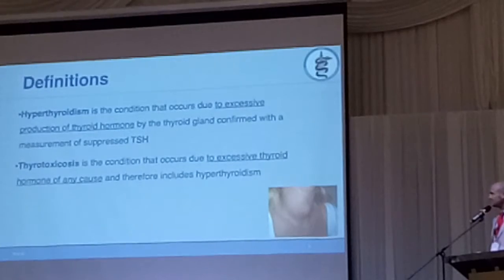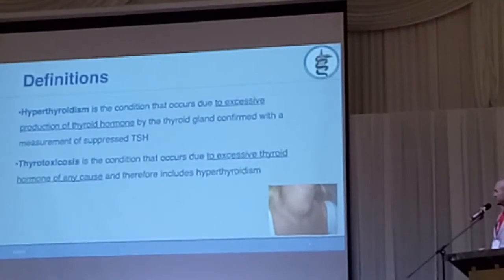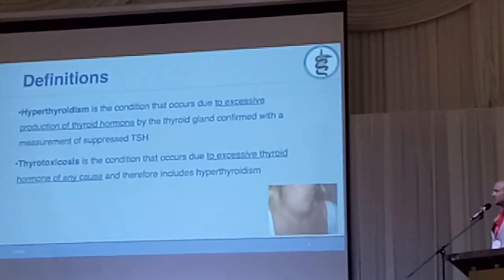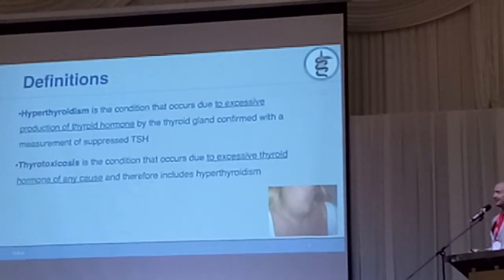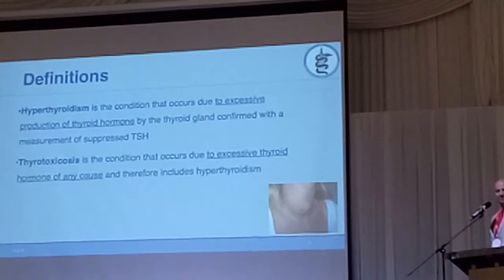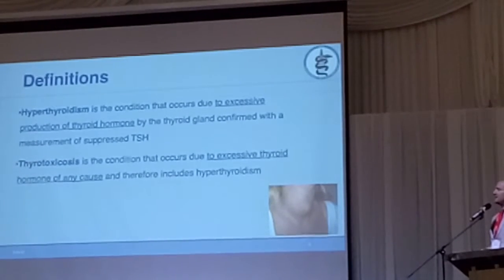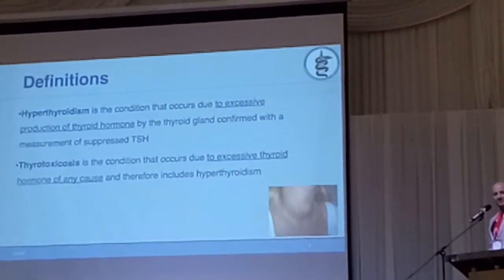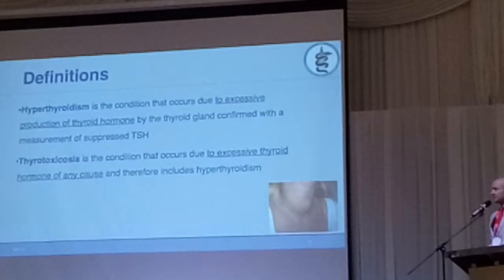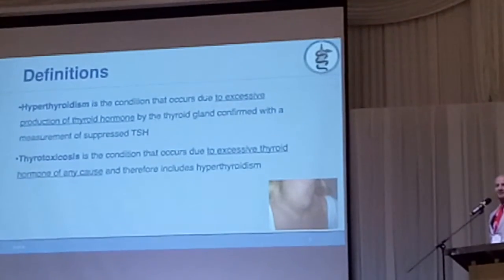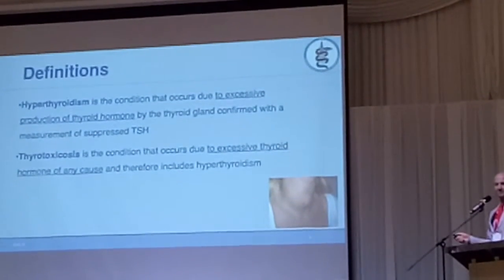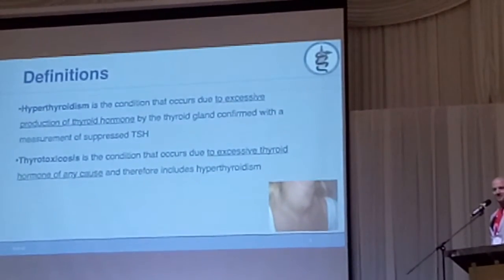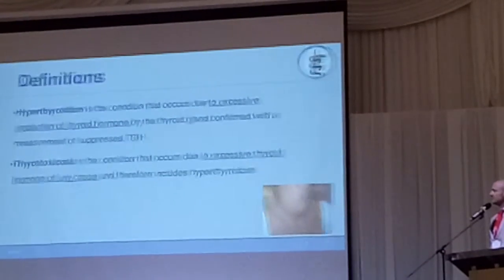So what's the definition? The definition of hyperthyroidism is a condition where you have excessive production of thyroid hormone by the thyroid gland. These terms are usually mixed up, or everybody uses them however they want, but this is the official definition.